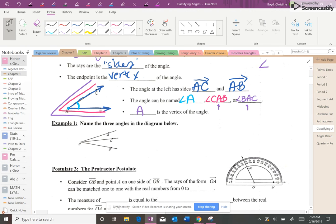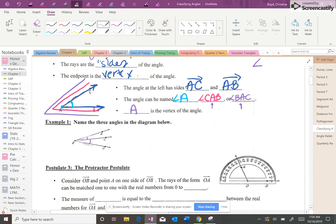Now, in this example, you cannot call it angle B, because if you look closely, there's one, two, and then three angles at this vertex. So the three separate angles are A, B, C, C, B, D, and the big angle is A, B, D.